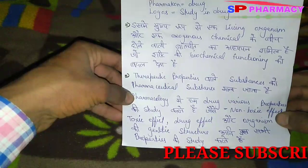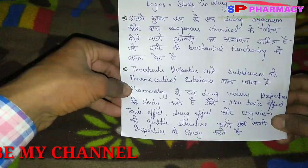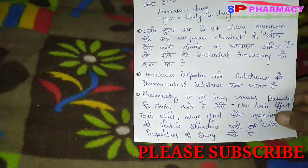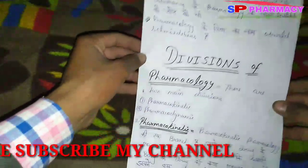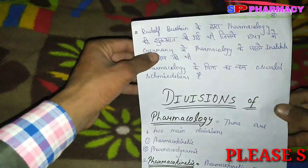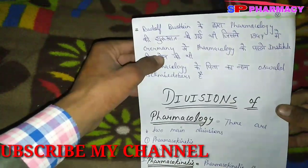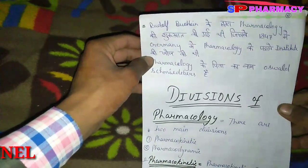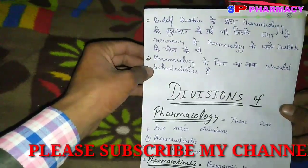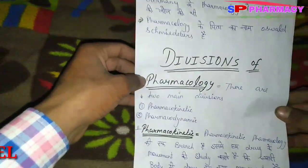Pharmacology studies non-toxic effects, toxic effects, drug effects, and the properties of an organism's genetic structure. Pharmacology as a formal discipline was started by Rudolph Buchan in 1847 in Germany.